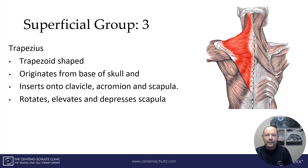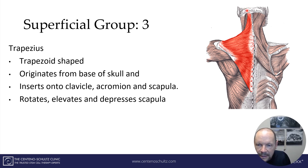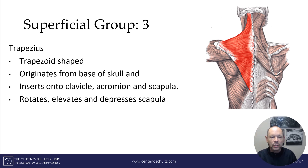Then there's the superficial group with three really important muscles. First and foremost, there's the trapezius — a trapezoid-shaped muscle. It originates at the base of the skull and inserts in many different places: onto the clavicle, the acromion, and the scapula. It functions to rotate, elevate, and depress the scapula — really important functions.